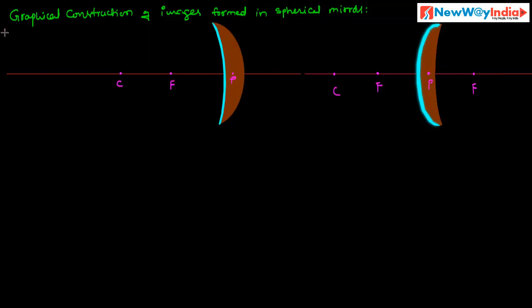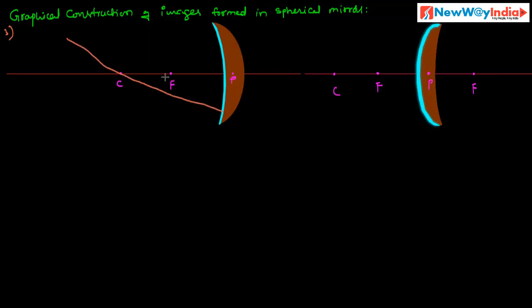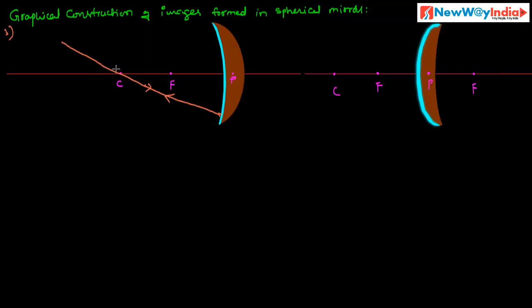What is Rule 3? If a ray of light passes through the center of curvature and is incident on a concave mirror, after reflection, it moves back along the same path — that is, the reflected ray retraces the incident ray through the center of curvature.